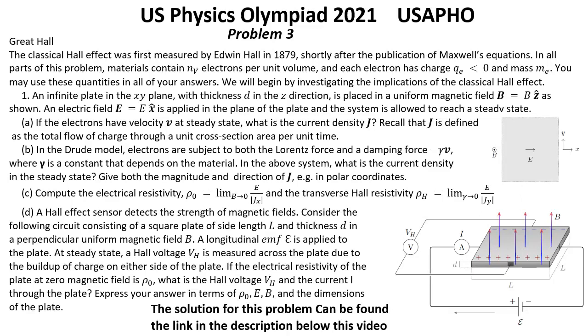Question B: In the Drude model, electrons are subject to both the Lorentz force and a damping force negative gamma V, where gamma is a constant that depends on the material. In the above system, what is the current density in the steady state? Give both the magnitude and direction of J in polar coordinates.